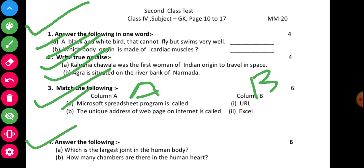Question number four: answer the following. Sub-part A — which is the largest joint in the human body? Sub-part B — how many chambers are there in the human heart? The marks breakdown: Question 1 is four marks, Question 2 is four marks, Question 3 is six marks, Question 4 is six marks — total twenty marks.